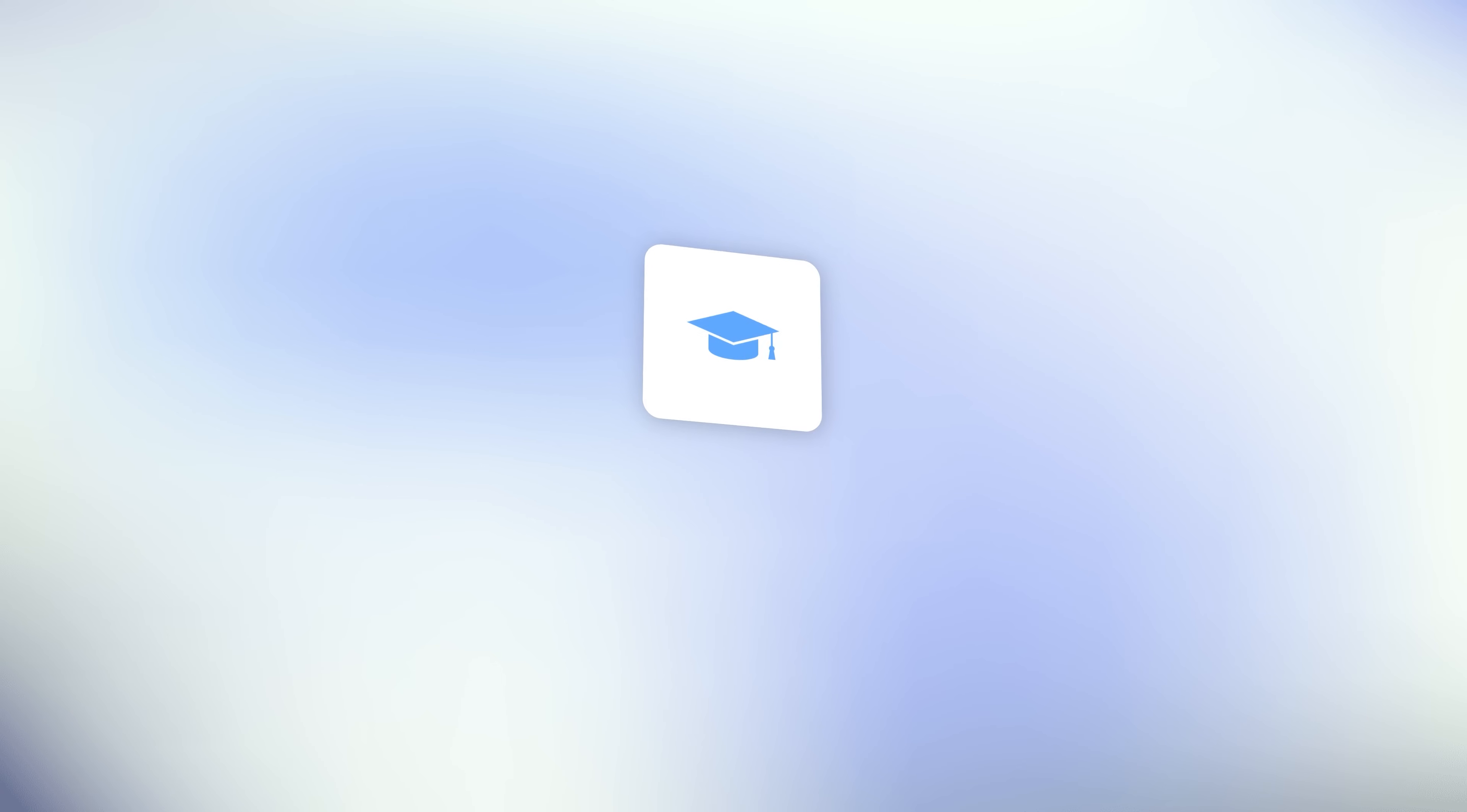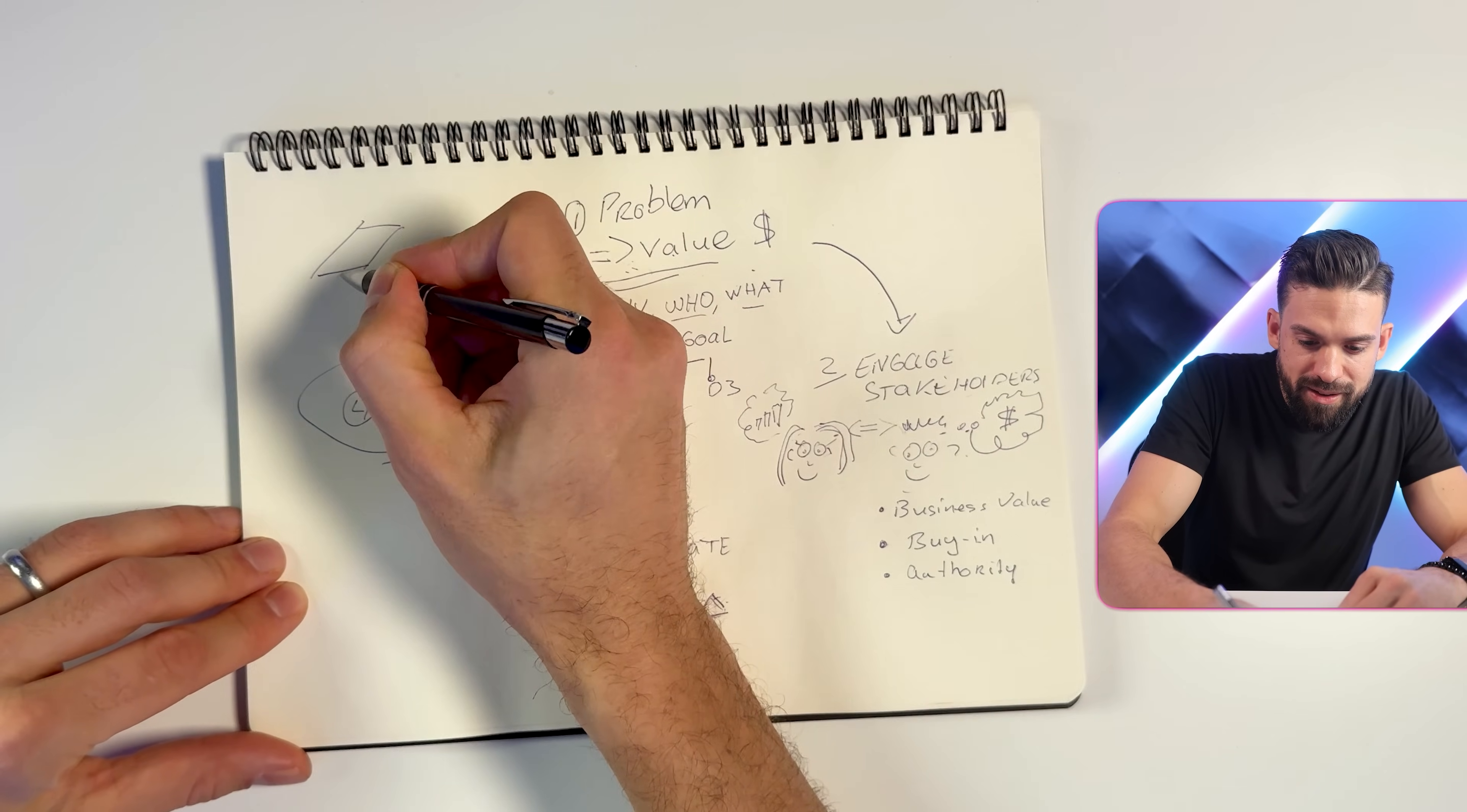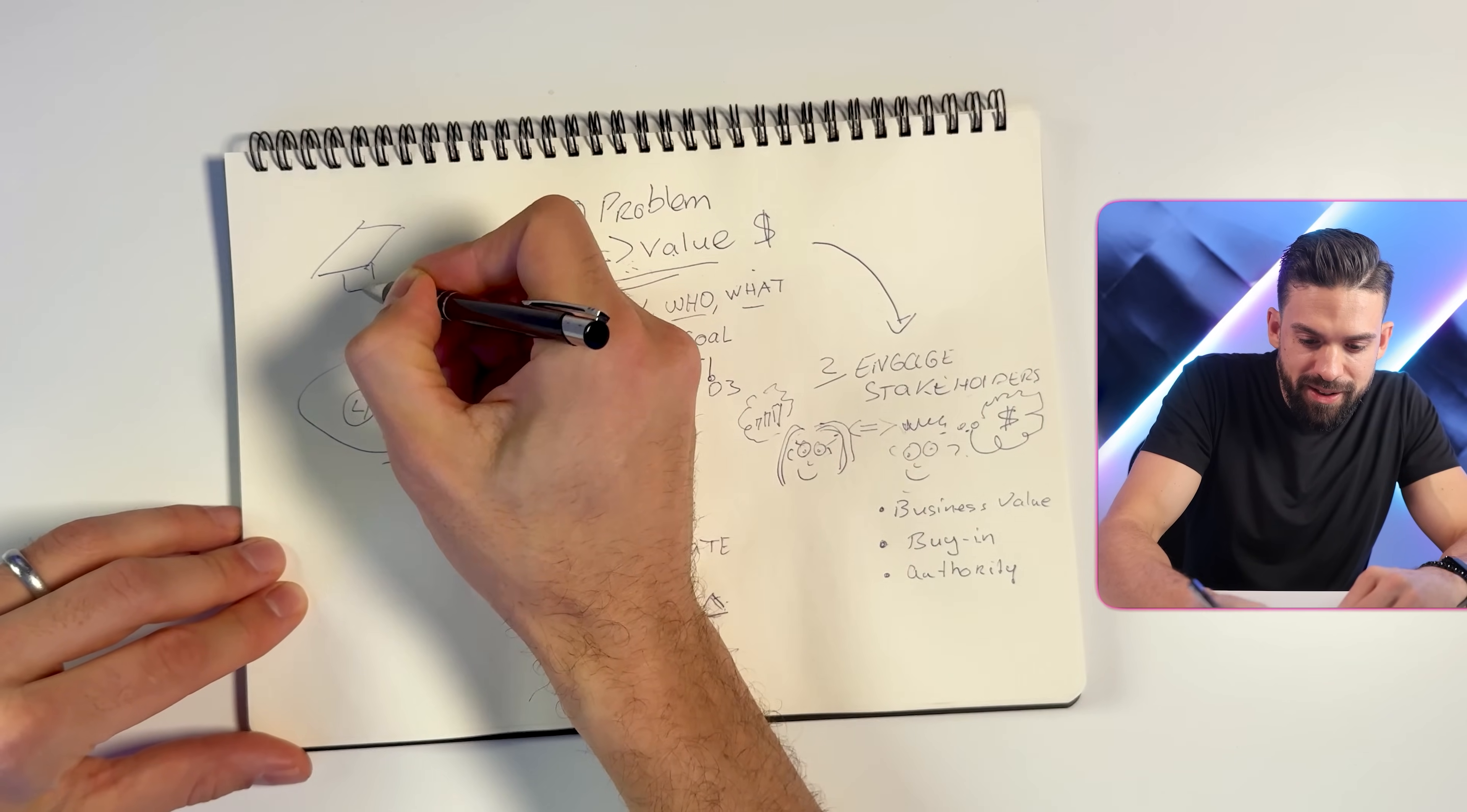Then number five: do not just assume that everybody knows how to use your BI report. So that brings me to number five: educate. Let me also draw here a nice little university. So this will make sure that people actually know how to use your report and get to the insights that they need to see to make better business decisions.